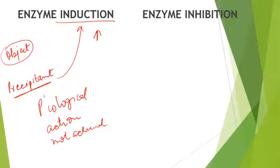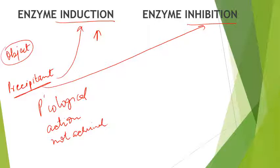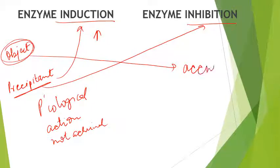If we talk about enzyme inhibition, the precipitant also causes enzyme inhibition. Inhibition means it inhibits the enzyme from acting. If the enzyme responsible for metabolism of the object drug is absent, that simply means the drug will cause accumulation in the body, and hence toxicity.